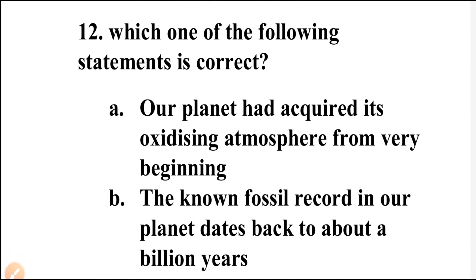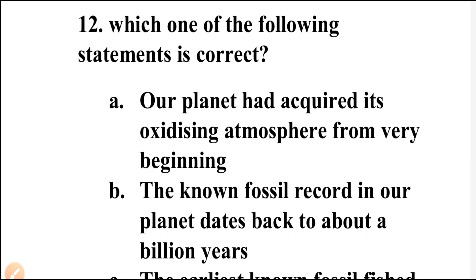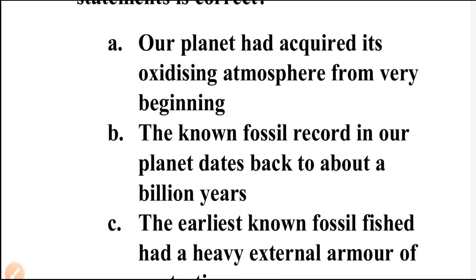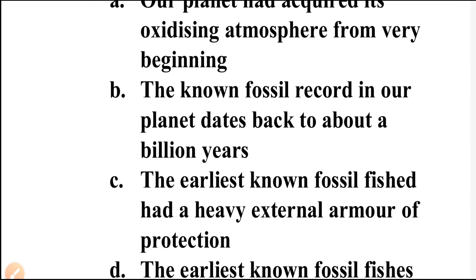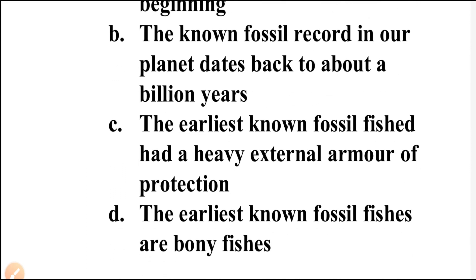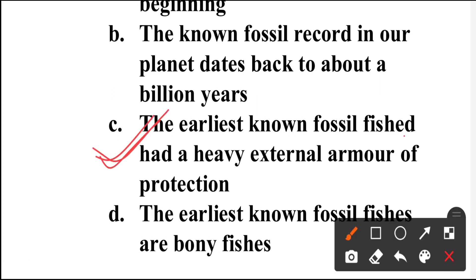Question number twelve: Which statement is correct? Our planet had an oxidizing atmosphere from the very beginning — no, as covered in previous lectures, there was no oxidizing atmosphere initially. The known fossil record dates back to about a billion years — no. The earliest known fossil fishes had a heavy external armor of protection — yes, the first fossil fishes discovered were ostracoderms, which had a heavy external armor. That is the correct statement.